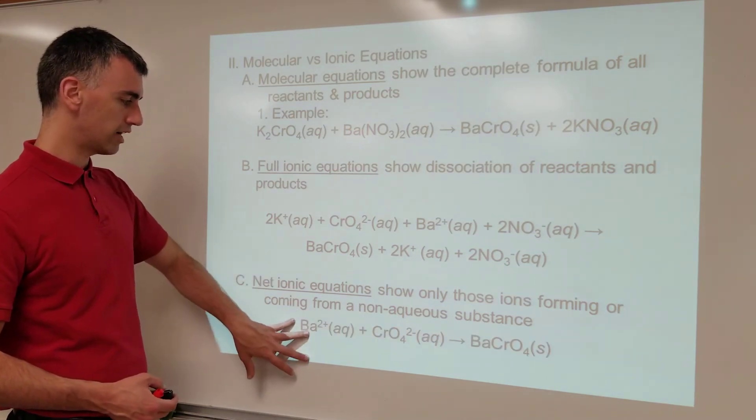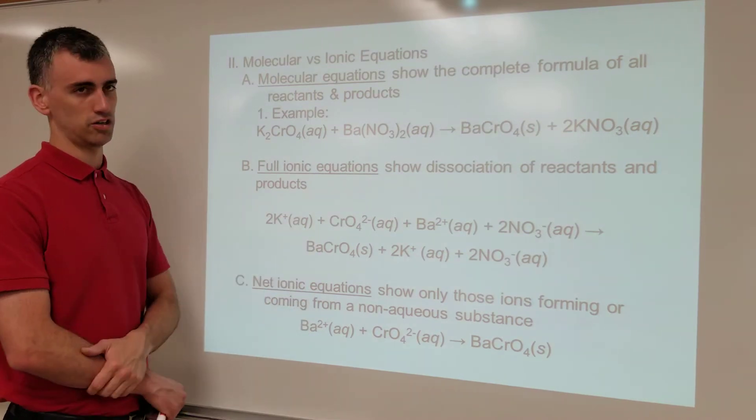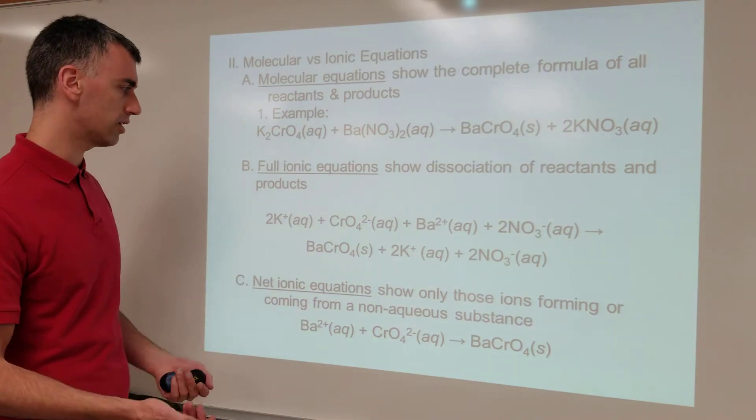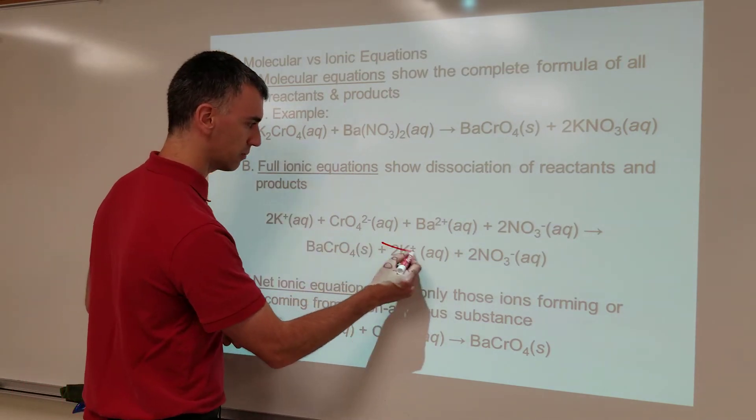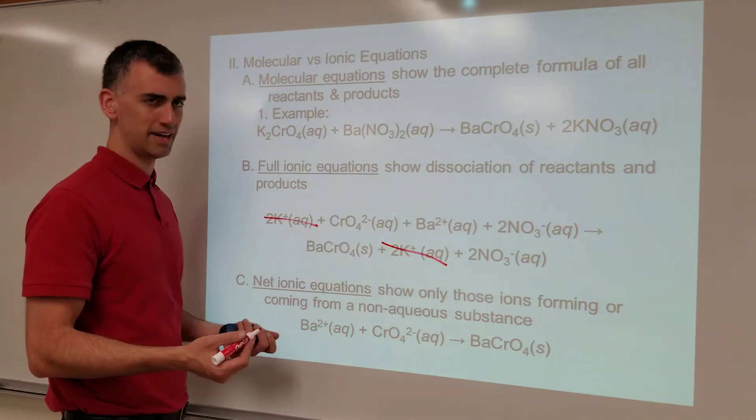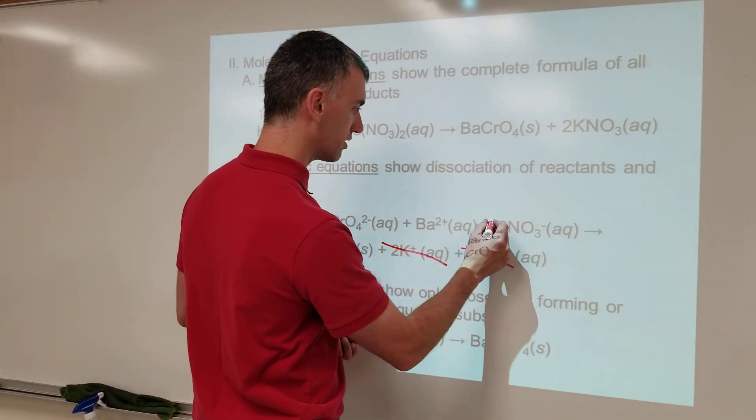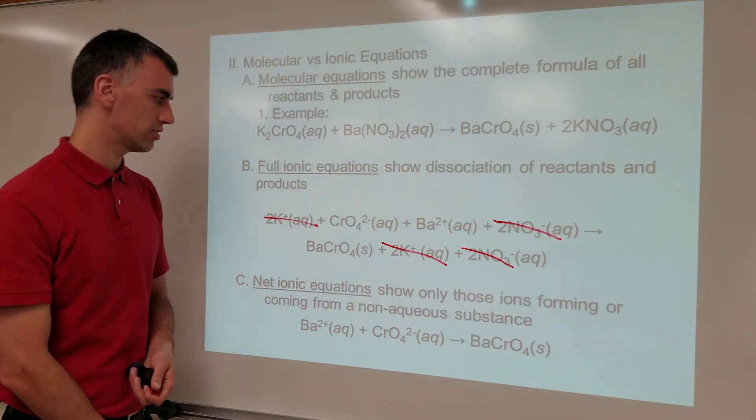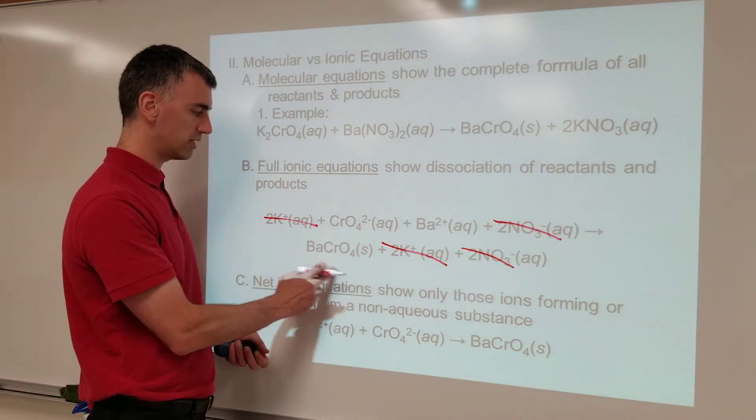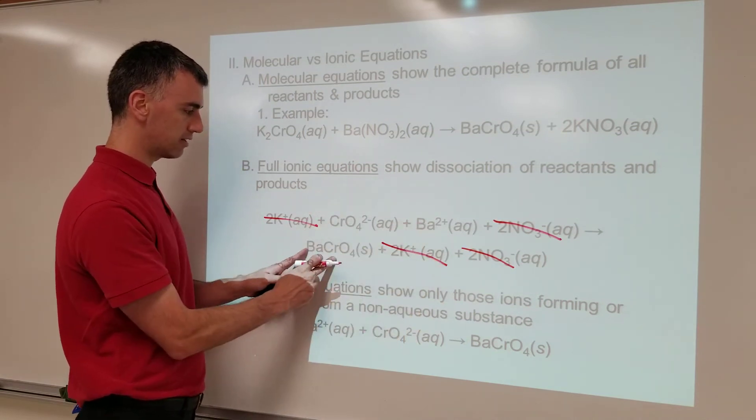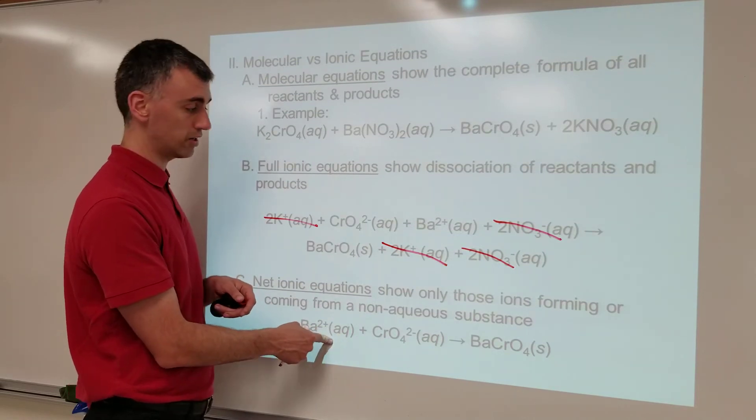So notice this. The net ionic equation is much shorter than the full ionic equation. The reason why, we said, okay, look, certain things like this potassium are present both in the products and the reactant side. So why pay attention to it? Ignore it. The nitrate is on both the product side and the reactant side. So why pay attention to it? Let's ignore it. We're going to say, look, here's the solid precipitate that's made, and these things came together to make this. So because they don't appear on both sides of the equation, you leave them behind for your net ionic equation. If that's true for this, that's true for these, because they don't appear on the same form on both sides.